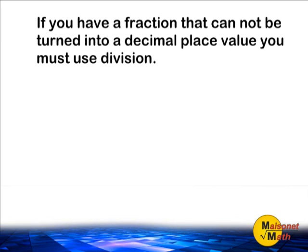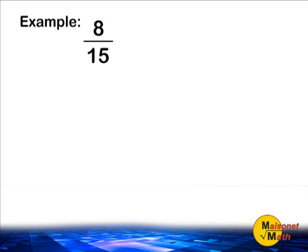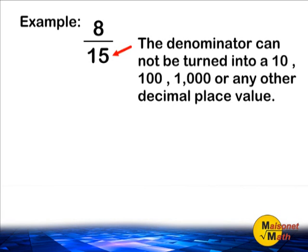Sometimes you cannot write an equivalent fraction in order to turn it into a decimal, because the denominator cannot be turned into one of the decimal place values. If this happens, you must use division to convert your fraction into a decimal. Let's use the example of 8 fifteenths. 15 is a denominator that we cannot change into the number 10, or the number 100, or the number 1,000. In this case, we are going to use division in order to convert this fraction into a decimal.